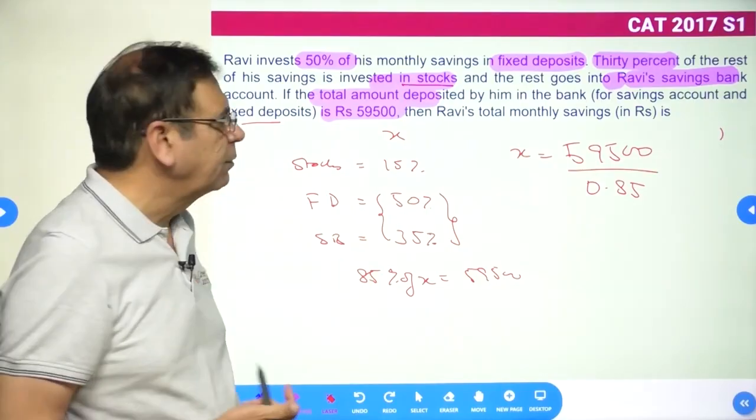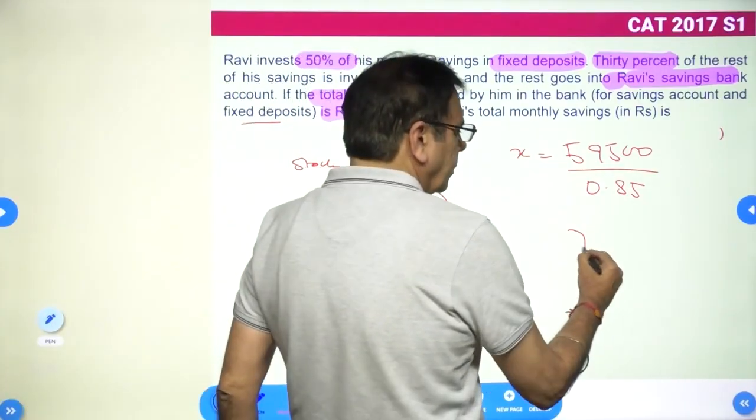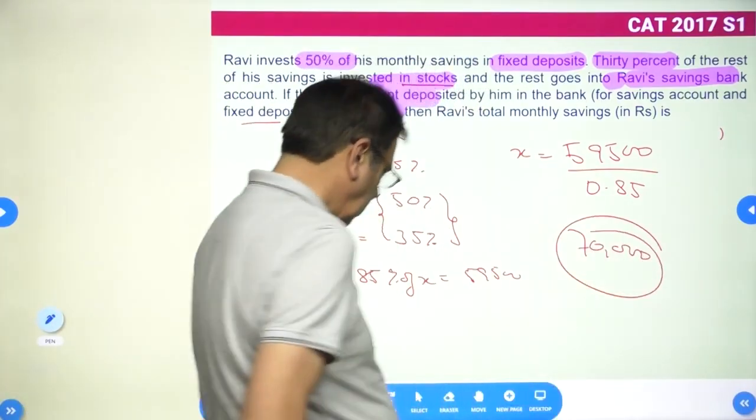What is the answer? The answer is 70,000.